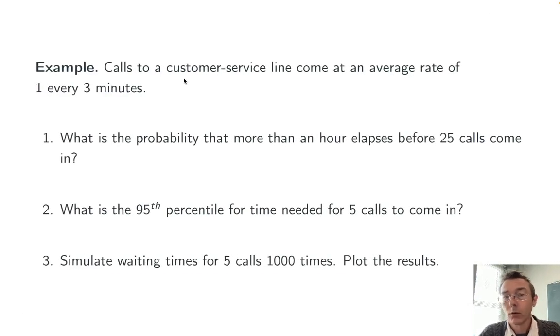Number 2. What's the 95th percentile for the time needed for 5 calls to come in? Okay, so here we're going to have the same scale parameter, the same rate parameter as before. However, in this case the shape parameter alpha is different. Now we're only interested in 5 calls. We are given a percentile number here, the 95th percentile, and we want to find a waiting time. So this is going to be a qgamma call.